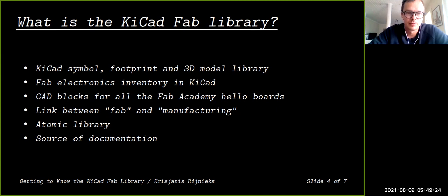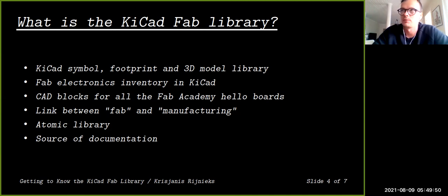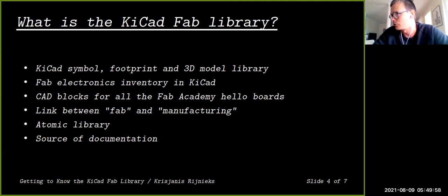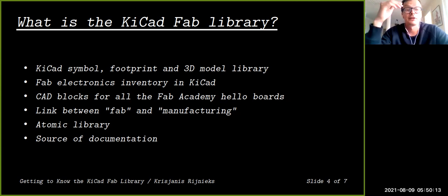The library can also be a link between fabricatable boards and manufacturing. When you learn to use the Fab library and produce a project, it should be fairly easy to adjust the project to be sent to one of the online manufacturing houses. Another key feature is that it is an atomic library — meaning each symbol is connected with a specific footprint and also a 3D model.